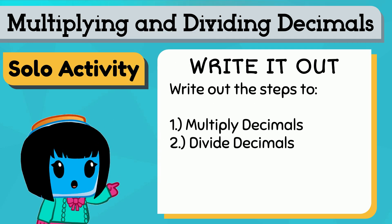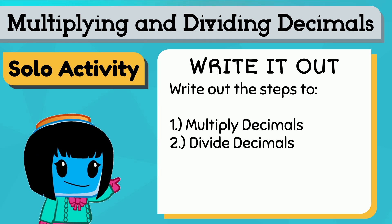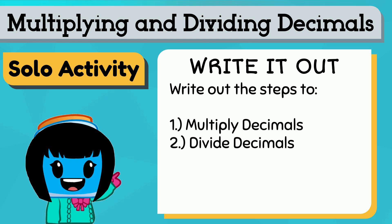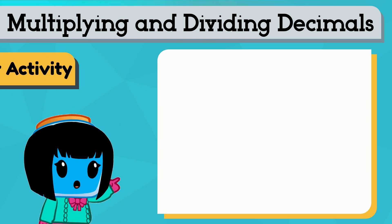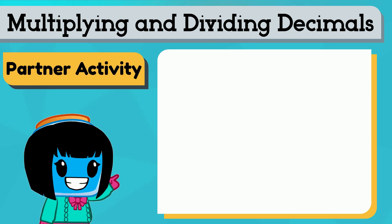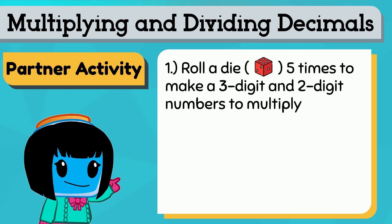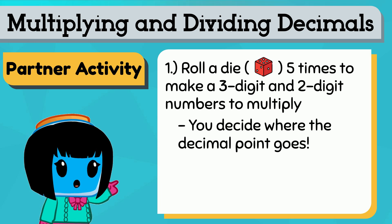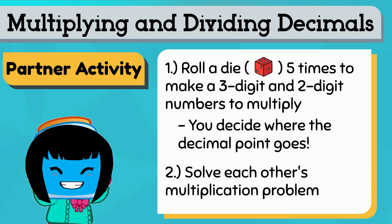Write out the steps to multiply and divide with decimals. You can do this with a partner. Roll a die five times to create a three-digit by two-digit multiplication problem. You get to decide where the decimals go. Have your partner solve your problem and you can solve theirs.